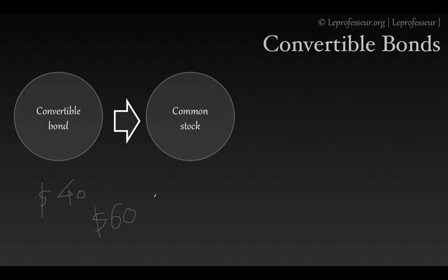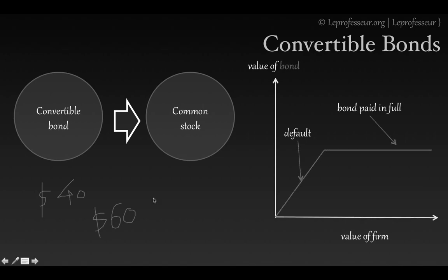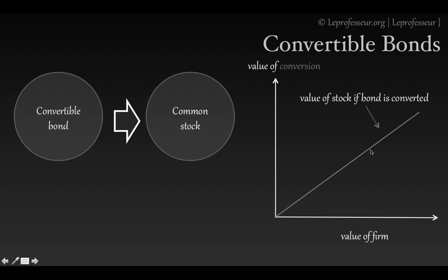Let's talk about how the value of a convertible bond behaves relative to the value of the firm. For a regular bond, whether the firm's value goes up or down, the bond is paid in full and remains constant — except if the company defaults or goes bankrupt. For stock, the value typically rises as the company value rises.